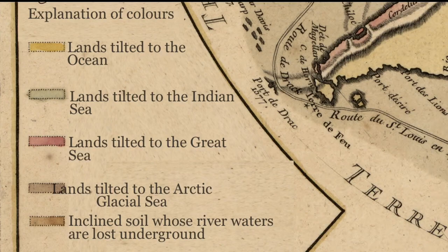Explanation of Colors: Lands tilted to the Sea, Lands tilted to the Indian Sea, Lands tilted to the Great Sea, Lands tilted to the Arctic Glacial Sea, Inclined soil whose river waters are lost underground.